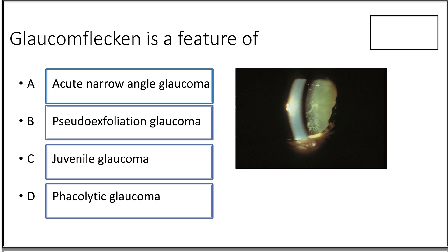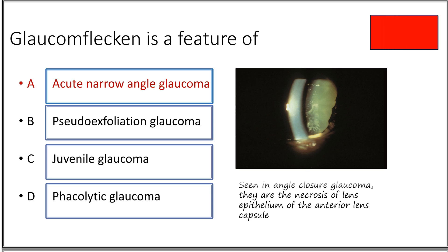Thirteenth question: glaukomflecken is a feature of — option A acute angle closure glaucoma, option B pseudoexfoliation glaucoma, juvenile glaucoma, or phacolytic glaucoma? Glaukomflecken is seen in acute angle closure glaucoma and is a classic sign of previous angle closure attacks. They represent necrosis of the epithelium of the anterior lens capsule.